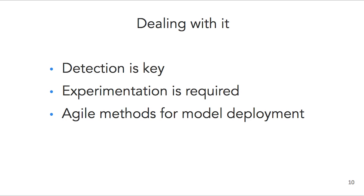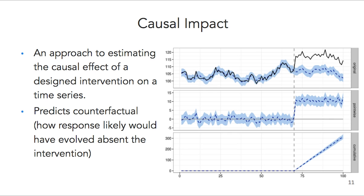So how do we deal with Goodhart's Law? Detection is key — you must be vigilant about monitoring and having the right metrics to tell you if this is happening. Experimentation is also heavily required; you can't be afraid to release models or make changes. A failure to act is a failure to innovate. You need agile methods for model deployment. I work towards an environment where we can do continuous deployments anytime, in an A/B test fashion, with no friction between me and pushing out an experimental version of a model. Causal impact is one interesting tool — it uses historical data to make predictions, and at the time some intervention happens, it helps you estimate the impact of that model release: the difference between what actually happened and what was forecasted to happen without the intervention.